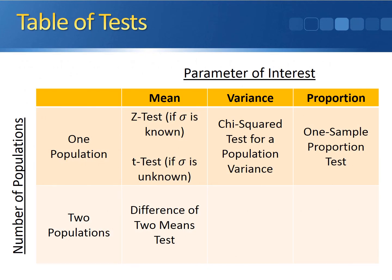We're getting close to finishing off the summary table. The F-test for the ratio of two variances goes in the middle of the bottom row — we're comparing two populations, and the parameter of interest here is the variance.